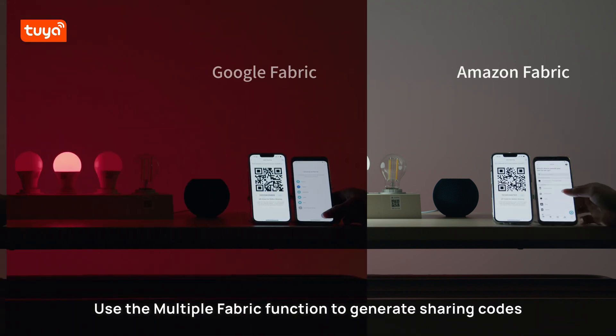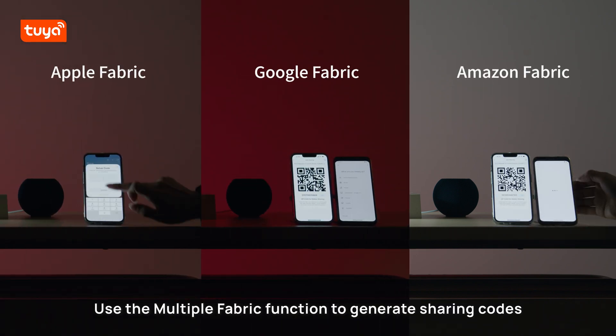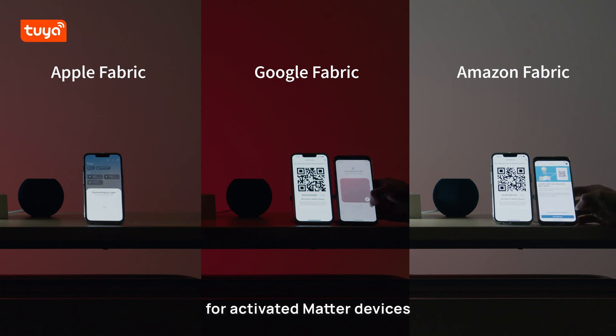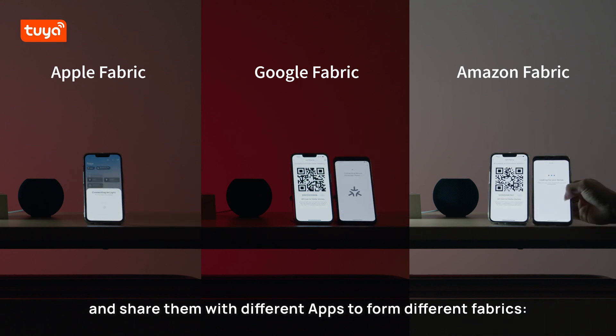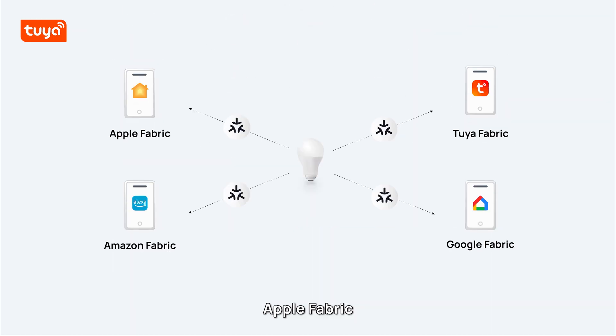Use the multiple fabric function to generate sharing codes for activated Matter devices and share them with different apps to form different fabrics — Apple Fabric, Google Fabric, and Amazon Fabric.